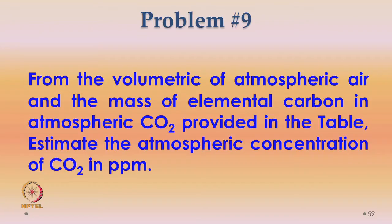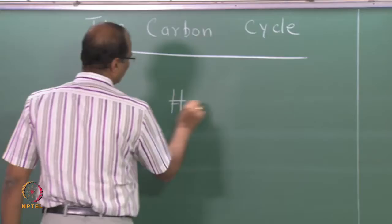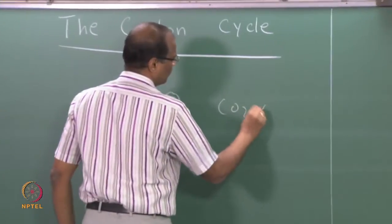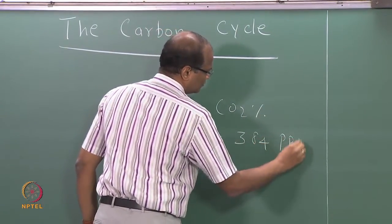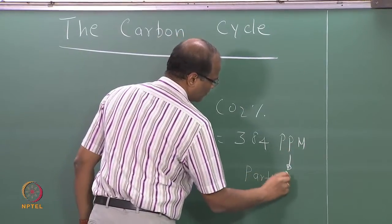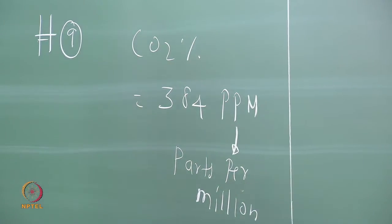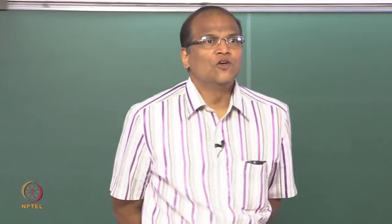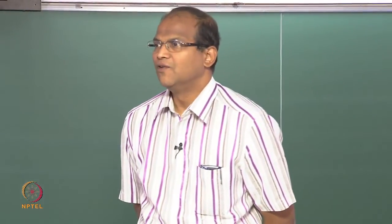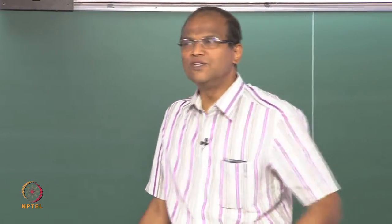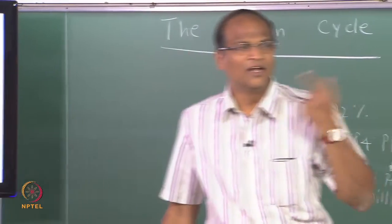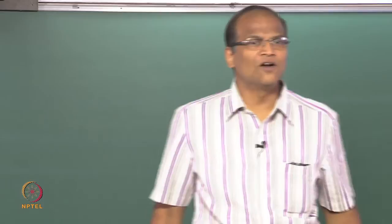This is the problem already discussed in the previous class. From the volumetric analysis of atmospheric air and the mass of elemental carbon in atmospheric CO₂, estimate the atmospheric concentration. We got the solution as 384 parts per million. This concentration is continuously increasing. So if you are doing radiation calculations or a climate simulation, you can have future scenarios where instead of 384 ppm you put 394, 404 and so on, to find out the change in temperature. This is called studying radiative forcing.